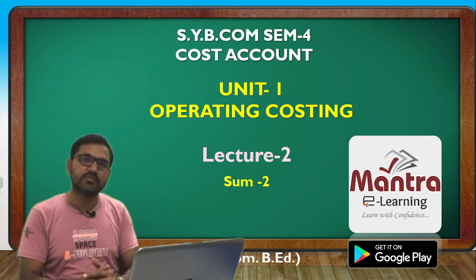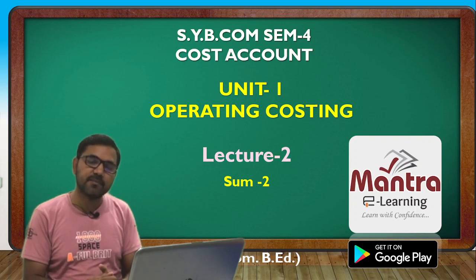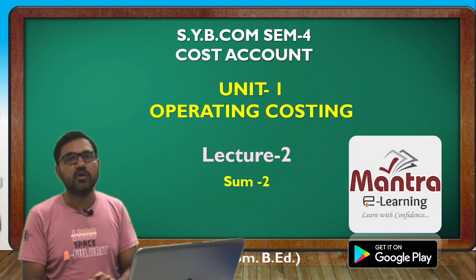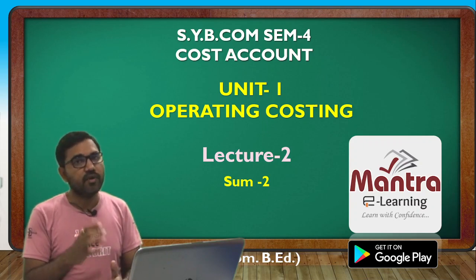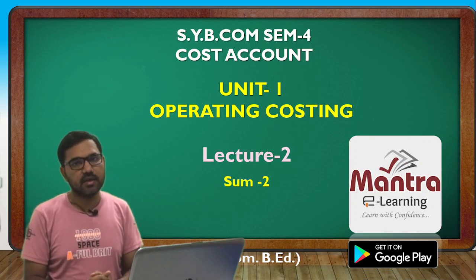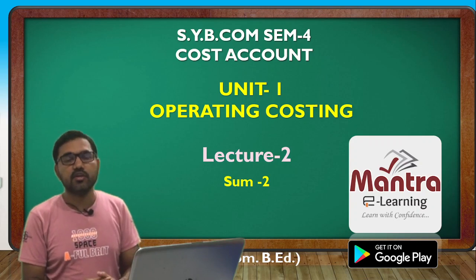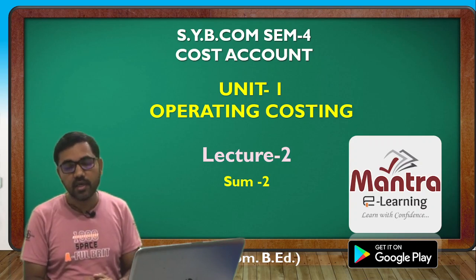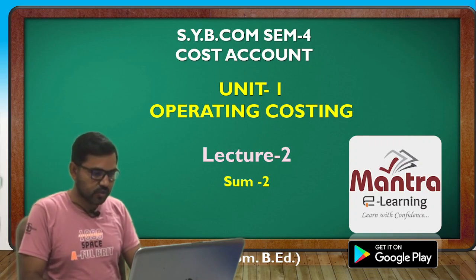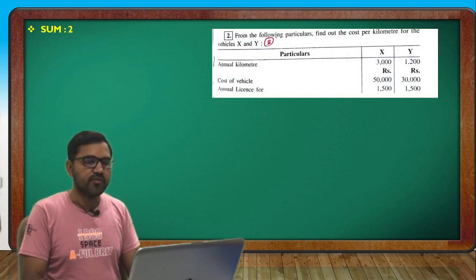Let me explain the operating costing system. To find operating cost, we divide the expenses into two parts — fixed expenses and variable expenses. If expenses are given monthly, we take them monthly; if given annually, we take them annually.